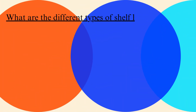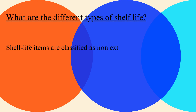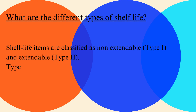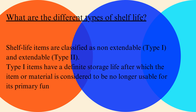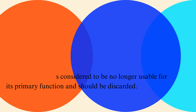What are the different types of shelf life? Shelf life items are classified as non-extendable type I and extendable type II. Type I items have a definite storage life after which the item or material is considered to be no longer usable for its primary function and should be discarded.